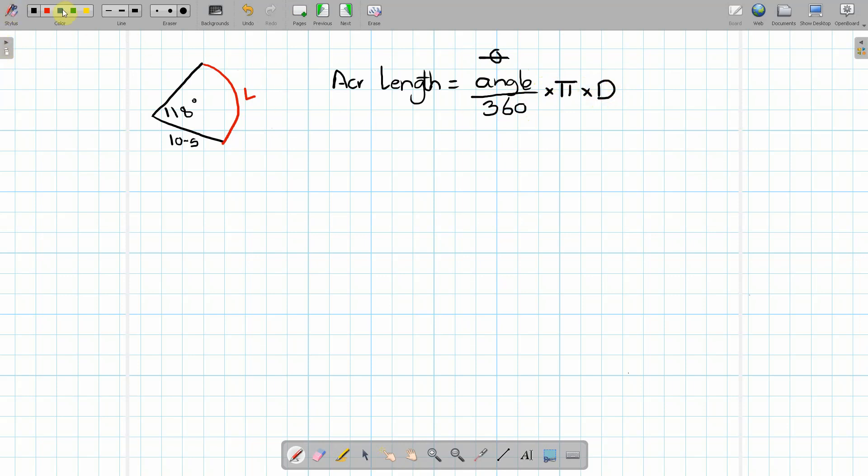Now as it stands just now we know the angle, we know pi and we have enough information that we know the diameter because it gives us the radius so we can work out the diameter. So for D the diameter is 2 times the radius. So in this case it's going to be 2 times 10.5 which means our diameter is going to be 21.